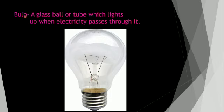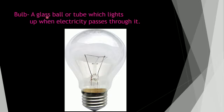Next one — bulb. A glass bulb or tube which lights up when electricity passes through it. See the picture of the bulb. This is called a glass bulb. Inside you can see the filament — this is called a filament. Bulb means a glass bulb or tube which lights up when electricity passes through it.